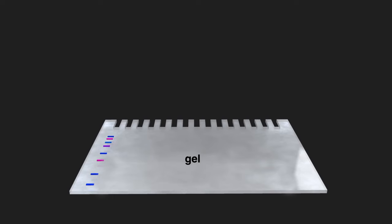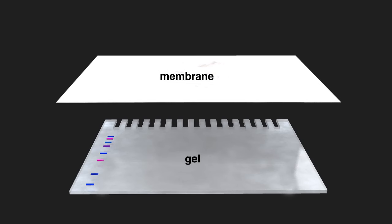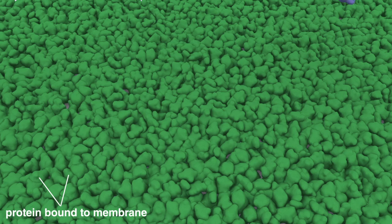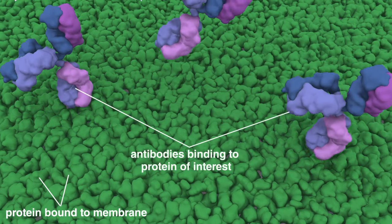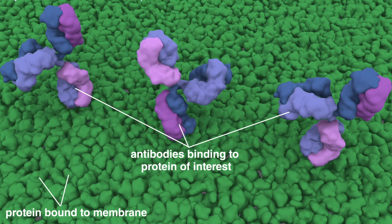To process the gel further for detection and visualization of specific proteins and molecules, the proteins are transferred from the gel onto a more durable material that can be manipulated and blotted with antibodies of interest. Transferring is necessary to allow antibodies free access to proteins and because polyacrylamide gels are fragile and difficult to manipulate.